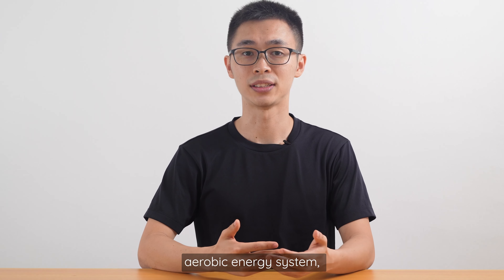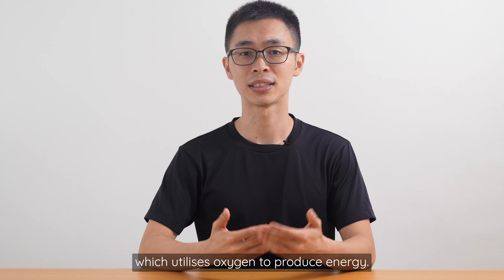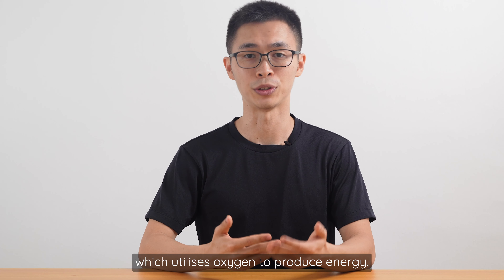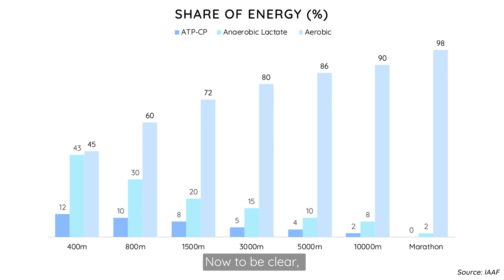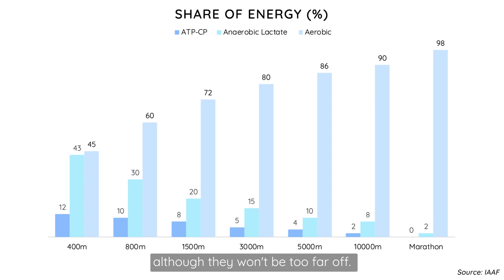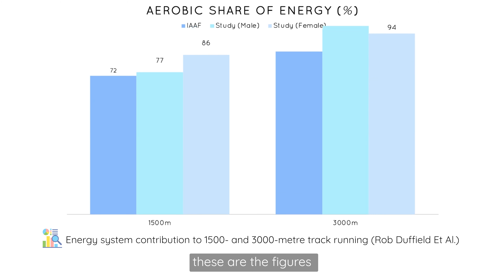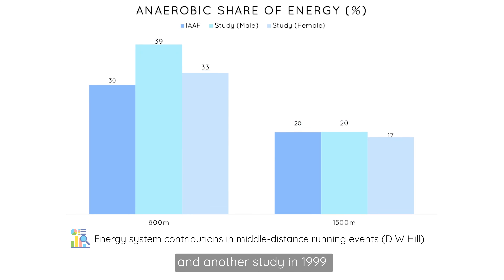Lastly, we have the aerobic energy system, which utilizes oxygen to produce energy. It's the main energy system you'll use for anything beyond 400m, including the 2.4. To be clear, these figures will vary for each individual, although they won't be too far off. For example, these are the figures according to a study in 2005 for males and females, and another study in 1999 also showed similar figures.